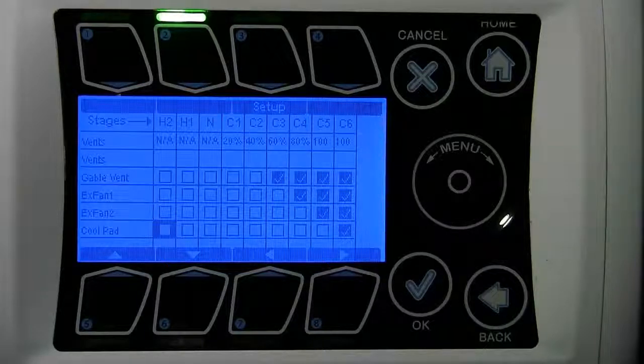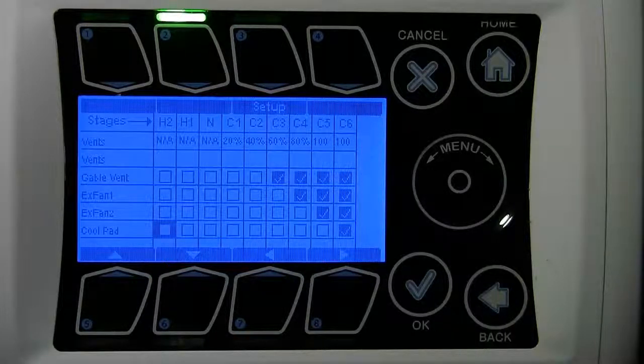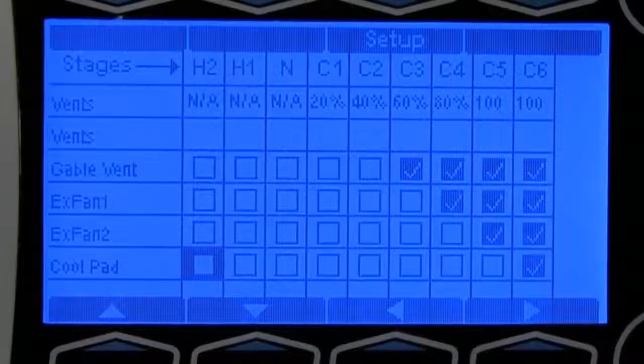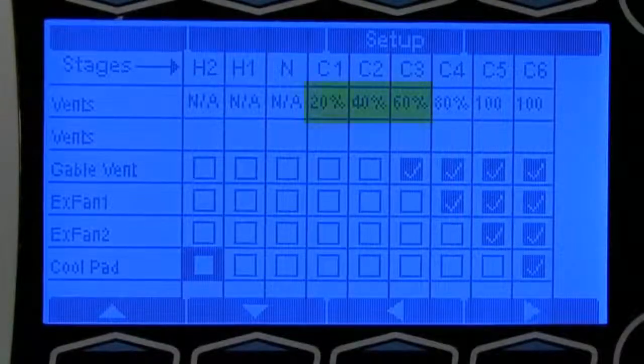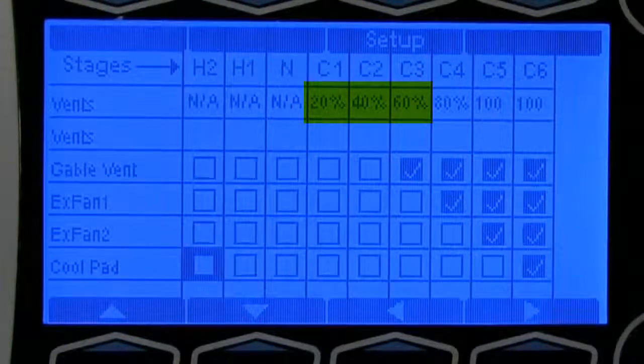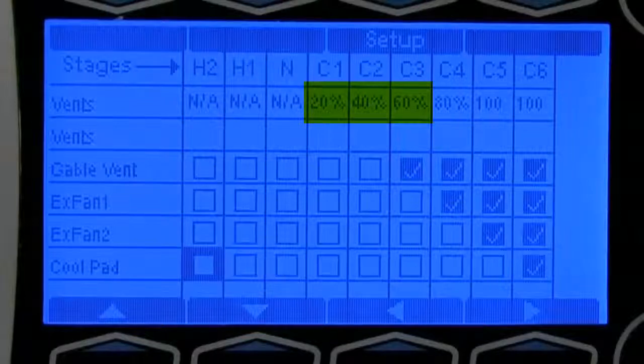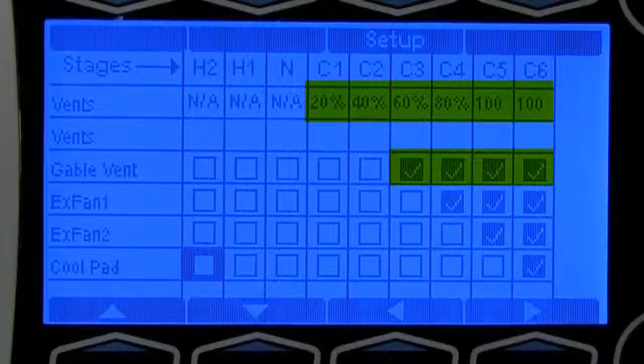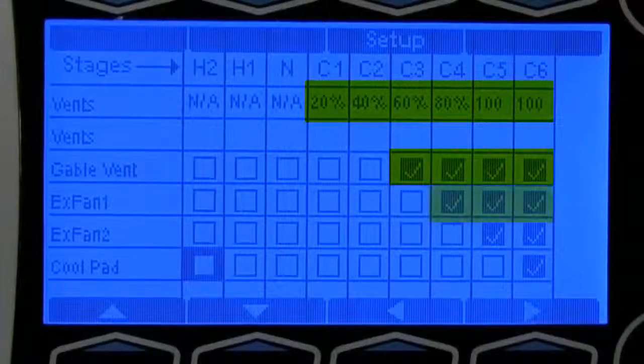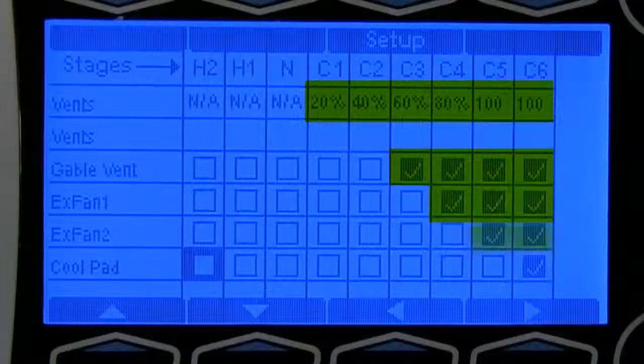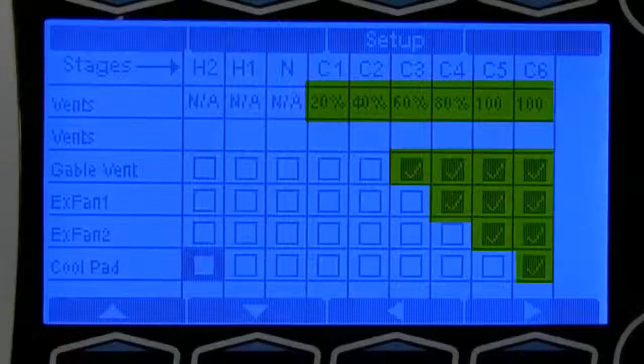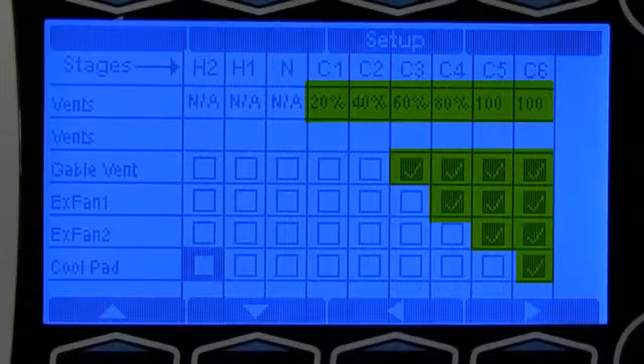Now that we're done, you want to make your equipment work together to get the temperature back within the neutral set points that you're trying to get to. As you can see, you have your vents opening at the beginning of the early cooling stages, and then you have your gable vents helping, and then your exhaust fans helping, and then your cool pad coming on towards the end of your cooling stage to help deter that heat back into the neutral zone.